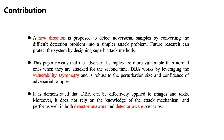Contribution. A new direction is proposed to detect adversarial samples by converting the difficult detection problem into a simpler attack problem. Future research can protect the system by designing superb attack methods. This paper reveals that adversarial samples are more vulnerable than normal ones when attacked for the second time. DBA works by leveraging the vulnerability asymmetry and is robust to the perturbation size and confidence of adversarial samples. It is demonstrated that DBA can be effectively applied to images and texts. Moreover, it does not rely on knowledge of the attack mechanism and performs well in both detector-unaware and detector-aware scenarios.